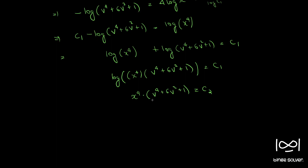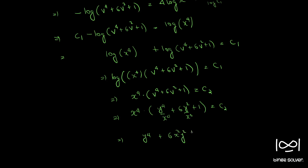Now back-substituting v = y/x: x⁴ · ((y/x)⁴ + 6(y/x)² + 1) = C₂. This gives x⁴·(y⁴/x⁴ + 6y²/x² + 1) = C₂. Expanding and multiplying x⁴ inside, we get y⁴ + 6x²y² + x⁴ = C₂.